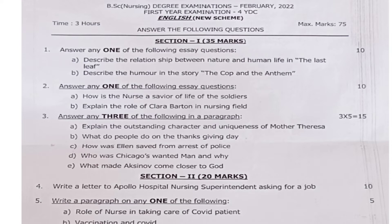Question 3 has sub-questions 3a through 3e, each carrying 5 marks — answer any 3, so 3 × 5 = 15 marks. 3a: Explain the outstanding character and uniqueness of Mother Teresa. 3b: What do people do on Thanksgiving Day? 3c: How was Ellen saved from arrest by police? 3d: Who was Chicago's wanted man and why? 3e: What made Axiknow come closer to God?